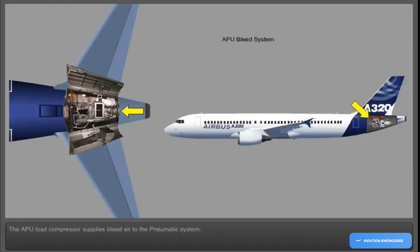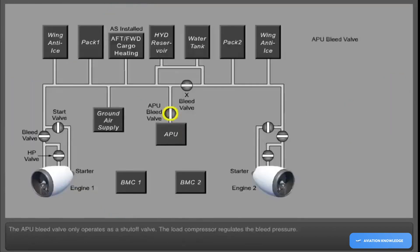The APU load compressor supplies bleed air to the pneumatic system. The APU bleed valve only operates as a shut-off valve. The load compressor regulates the bleed pressure.